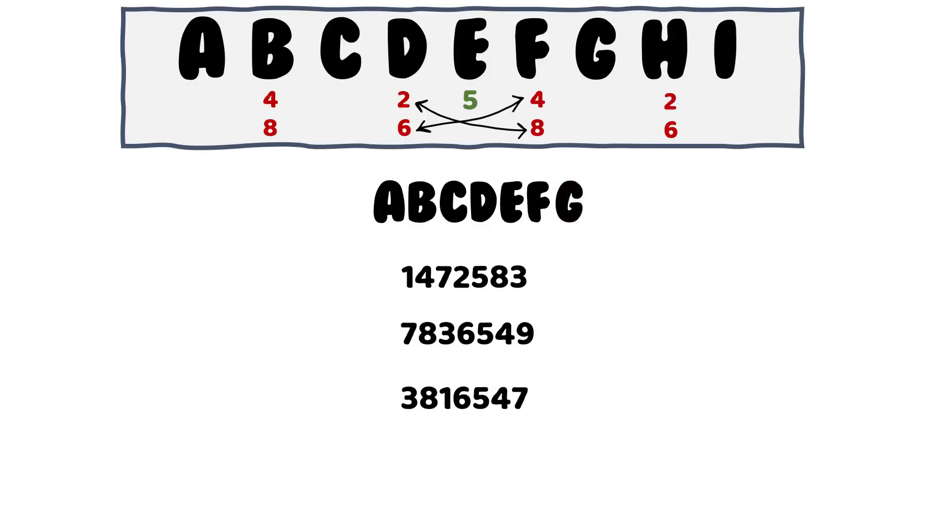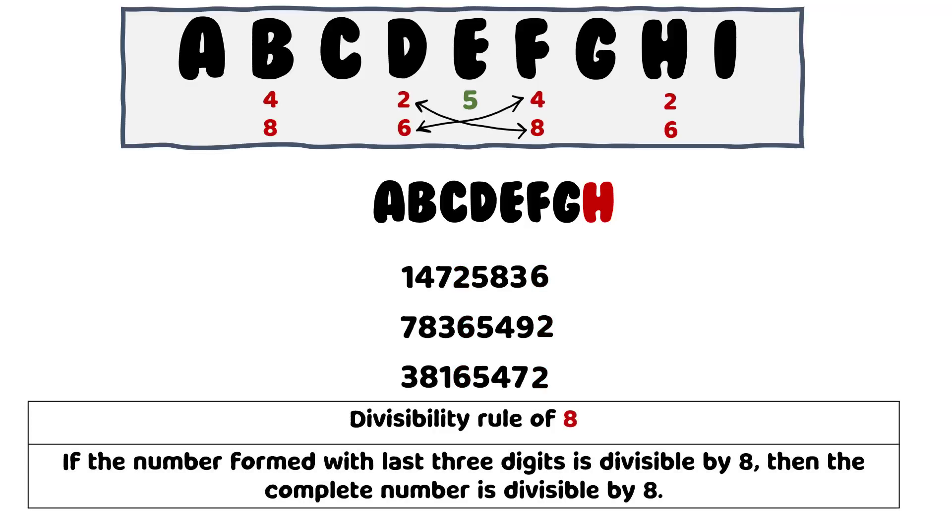Now, let's place the eighth number H. If D is 2, H has to be 6 as you can see at the top. And when D is 6, H would be 2. Now, the divisibility rule of 8 says, if the number formed with last three digits is divisible by 8, then the complete number is divisible by 8. So only this number passes the test.